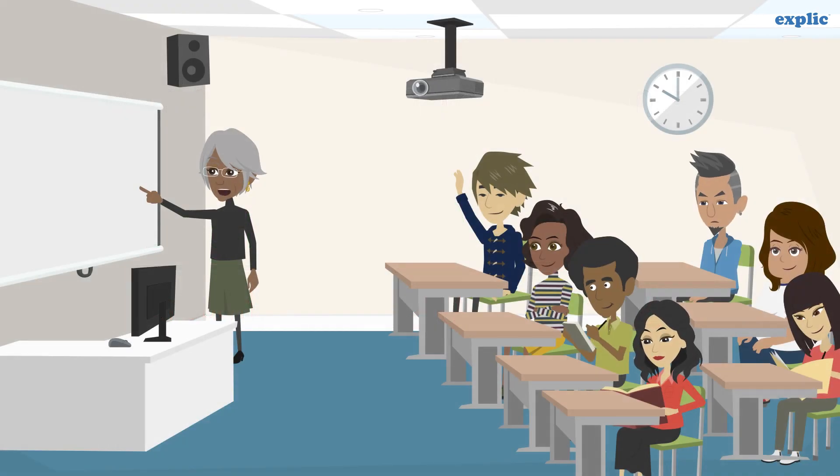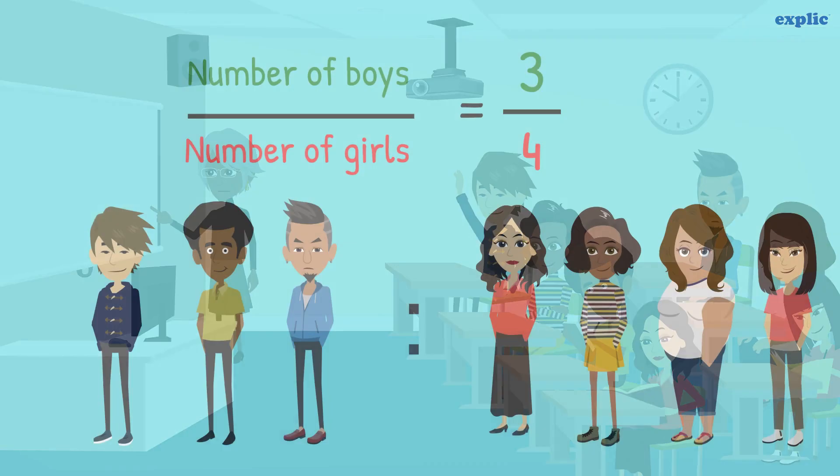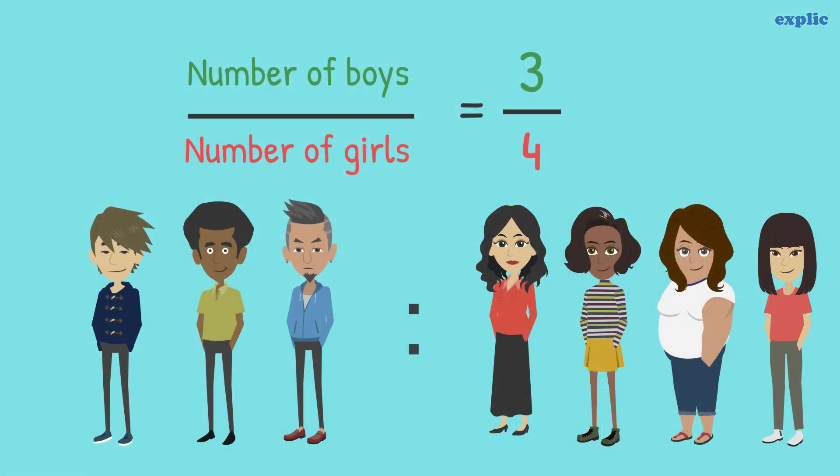Can you find out the ratio of the number of boys to the number of girls in this class? The ratio of the number of boys to the number of girls in the class is 3 by 4.